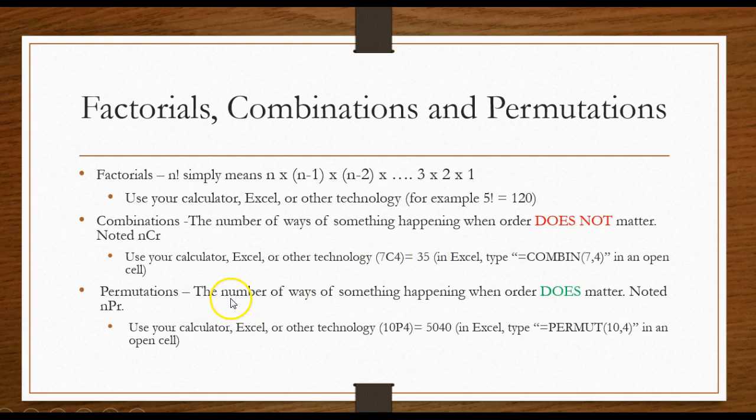Permutations. Permutations are the number of ways of something happening when the order does matter. Note it as nPr. Use your calculator Excel or other technology on those too like 10P4 would be 5040. When order matters you're going to get a lot more in terms of if you are using the same numbers.